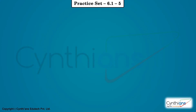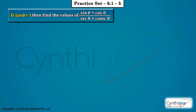Practice exercise 6.1, sum number 5: if tan theta is equal to 1, then find the value of sin theta plus cos theta upon sec theta plus cosec theta. We need sin theta, cos theta, sec theta, and cosec theta. Once we get all these values, we can substitute and get it done. We have tan theta is equal to 1, so let's start with the solution.